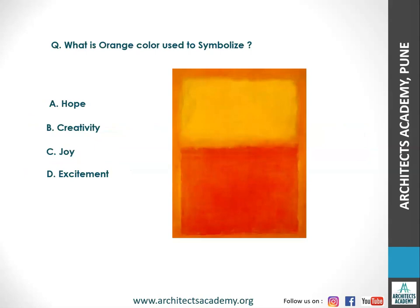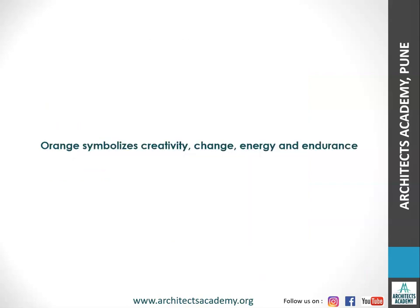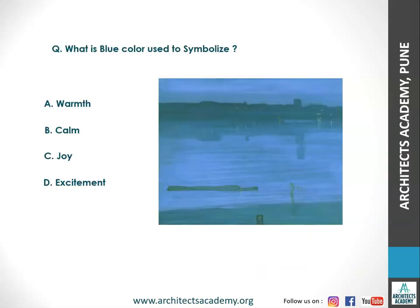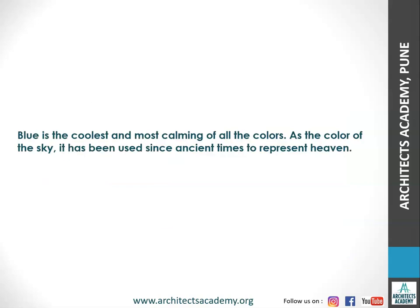Next question: what is orange color used to symbolize? The right answer is creativity. Orange symbolizes creativity, change, energy, and endurance. Next question: what is blue color used to symbolize? The right answer is calm — blue color indicates calmness. Blue is the coolest and most calming of all colors. As the color of the sky, it has been used since ancient times to represent heaven.